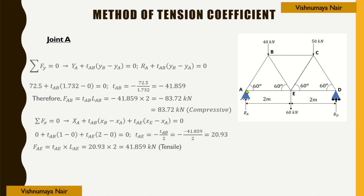Considering equilibrium along the x direction at joint A: summation Fx = 0 gives XA + TAB·(xb−xa) + TAE·(xe−xa) = 0. With XA = 0, xb = 1, xa = 0, xe = 2: 0 + TAB·1 + TAE·2 = 0. From this equation we can find TAE.